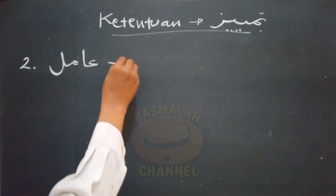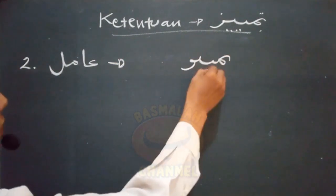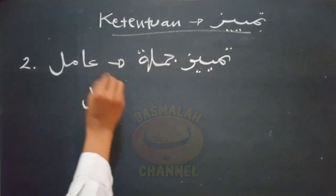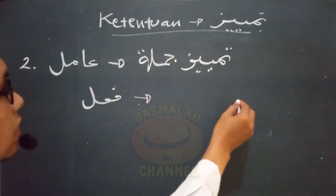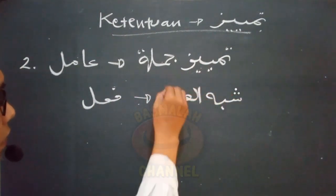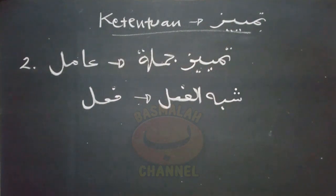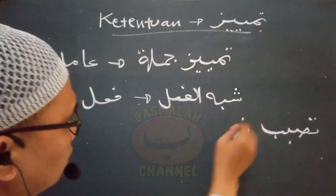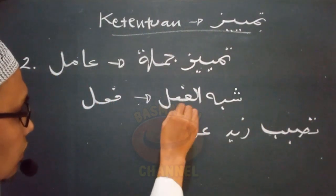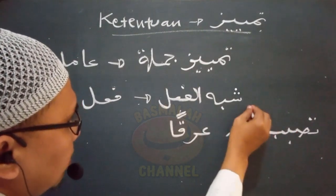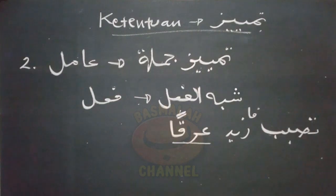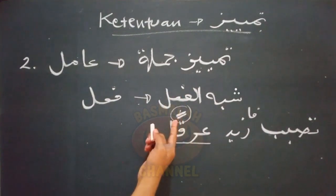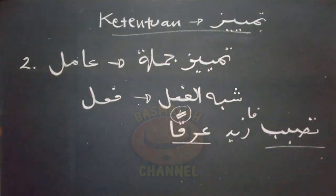Ketentuan yang kedua, amil dari Tamyis Jumlah itu adalah berupa kalimat fi'il atau kalimat yang menyerupainya. Contohnya seperti lafad 'Tasob Baba Zaidun Arokon' — mengalir keringat Zaid. Lafad 'Arokon' di sini kedudukannya sebagai Tamyis dan i'rabnya adalah Nasob. Yang menasobkan adalah fi'ilnya, yaitu lafad 'Tasob Baba'.